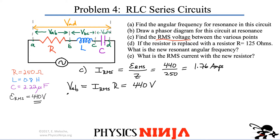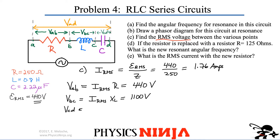The voltage from B to C is across the inductor. The RMS voltage is RMS current multiplied by the reactance of the inductor. We know omega-zero and the inductance, so plugging in gives 1100 volts. The voltage from C to D across the capacitor is the same value, because the reactances are equal at resonance.